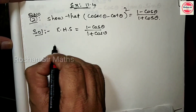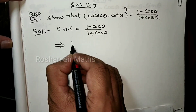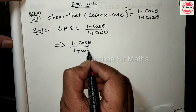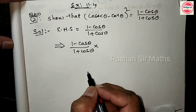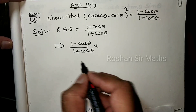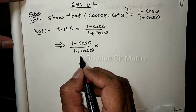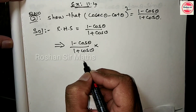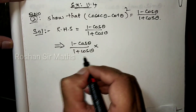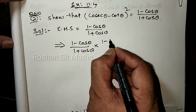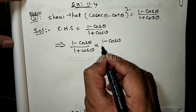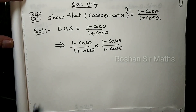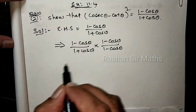अब इसके लिए हम क्या करेंगे? Step 1: (1 minus cos theta) by (1 plus cos theta). इसको denominator को हम rationalize करेंगे। Rationalize का मतलब है: अगर denominator में plus है तो minus के साथ multiply करेंगे numerator और denominator दोनों में। तो (1 minus cos theta) by (1 minus cos theta)। यह हो गया इसका rationalizing।